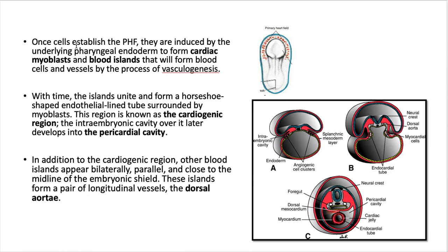Once cells establish the primary heart field, they are induced by the underlying pharyngeal endoderm to form the cardiac myoblast. The first structures to be induced are the cardiac myoblast and blood islands — islands of blood distributed in this region — that will form the blood cells and the vessels by the process of vasculogenesis. With time, the islands unite and form a horseshoe-shaped endothelial-lined tube surrounded by the myoblast cells. This region is known as the cardiogenic region.